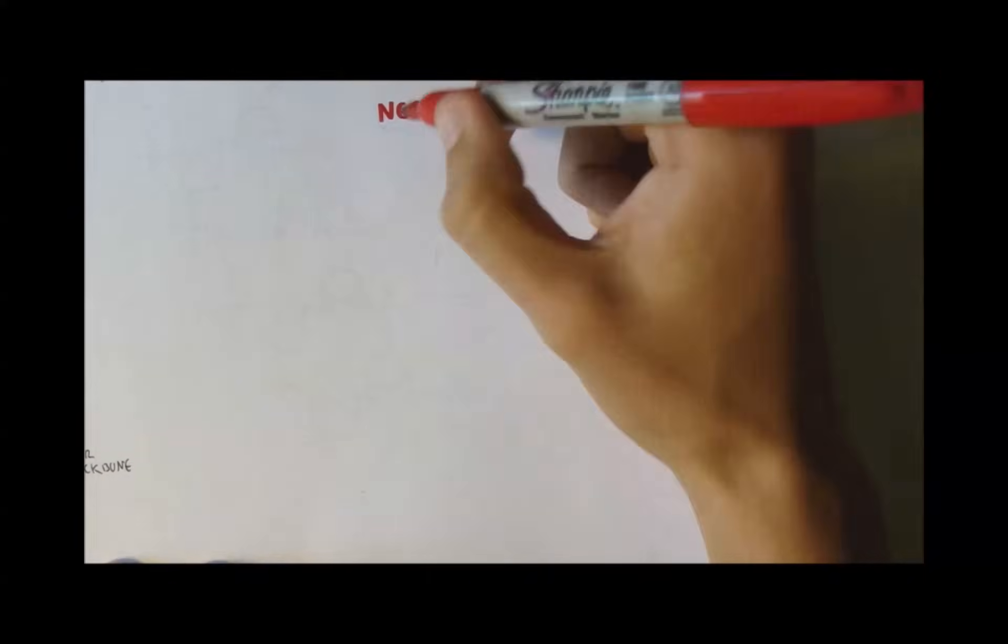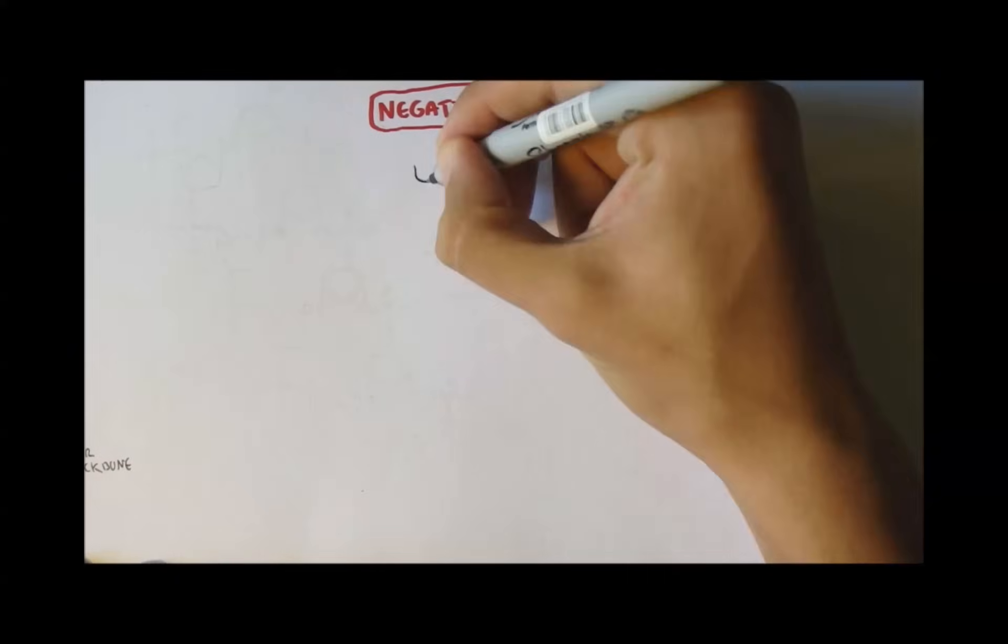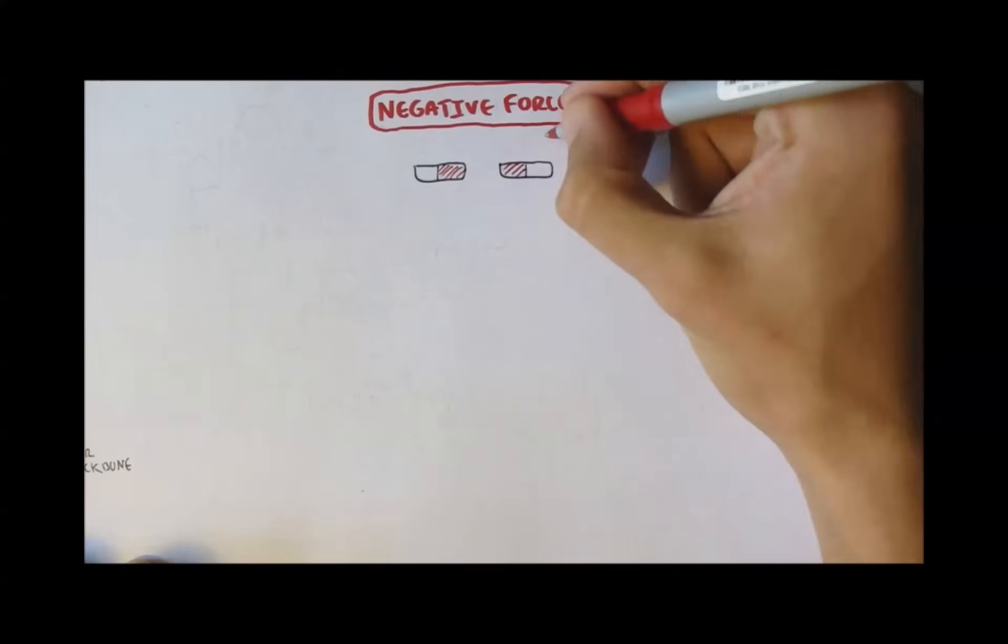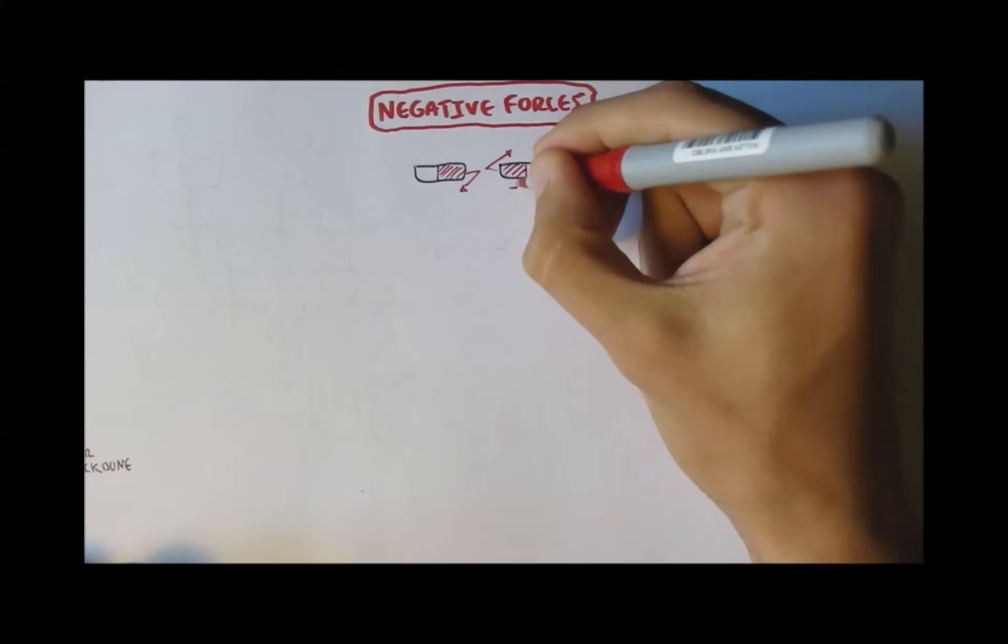So what are the negative forces? Well, the negative forces in DNA behave essentially like magnets. So if the negative sides are face to face, they would repel each other.